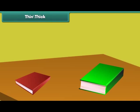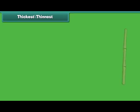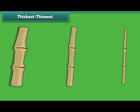Some objects are thin and some are thick. The picture on the left is thin and the picture on the right is thick. To compare the thickness of more than two objects, we use the words thickest and thinnest. The first stick is the thickest and the third stick is the thinnest.